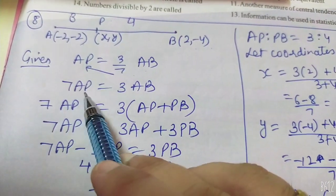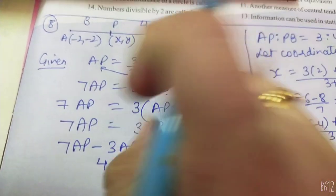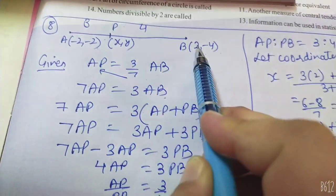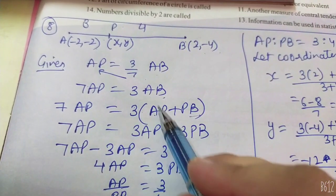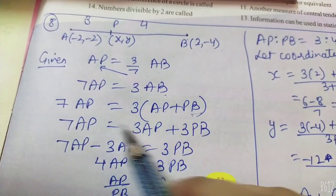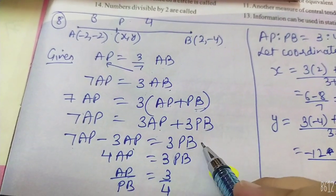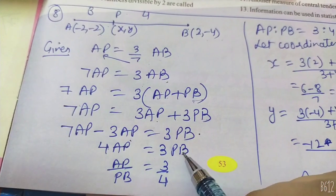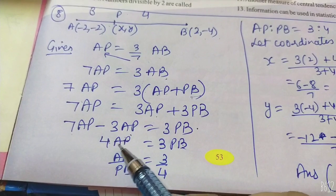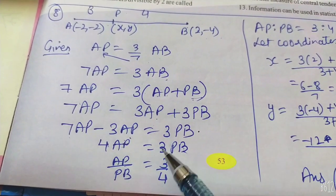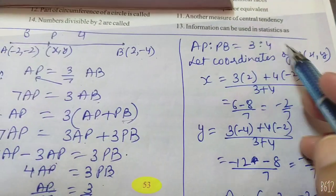7 को उधर ले गए: 7AP = 3AB. AB को break कर लिया AP + PB. खोला इसको: 7AP = 3AP + 3PB. AP वाले एक तरफ ले लिया: 7AP - 3AP = 3PB, यानि 4AP = 3PB. मुझे यही चाहिए था — AP और PB. तो AP:PB का ratio निकालने के लिए, PB को denominator में ले जाओ: AP/PB = 3/4, यानि AP:PB = 3:4.